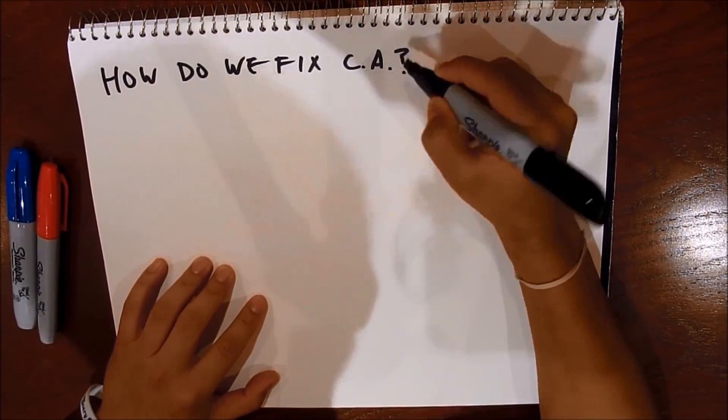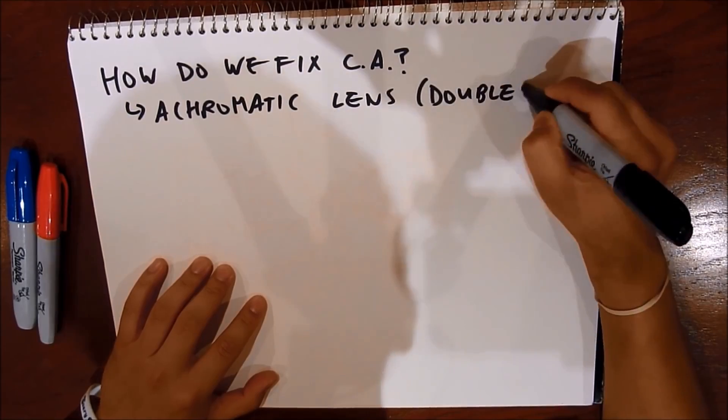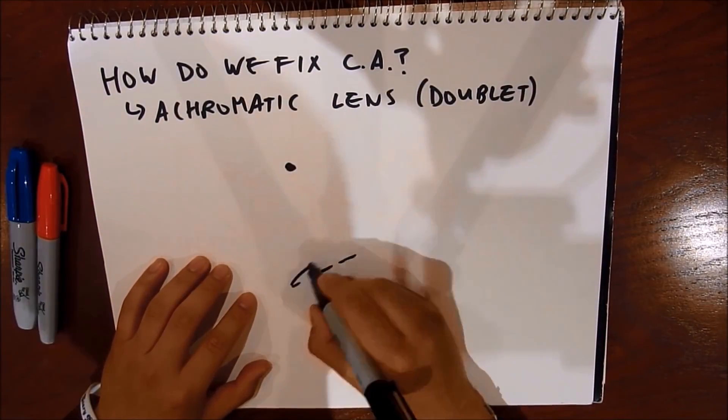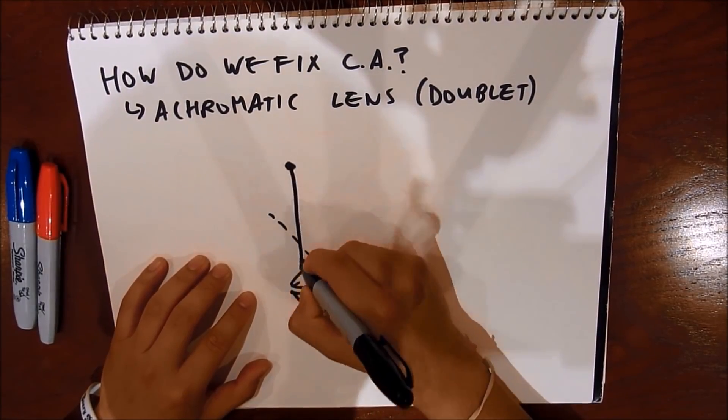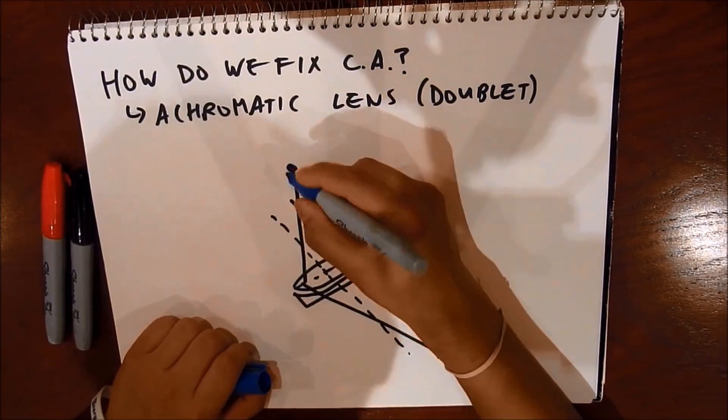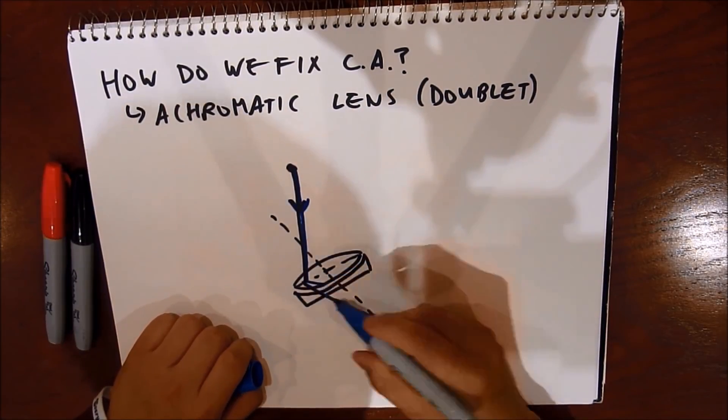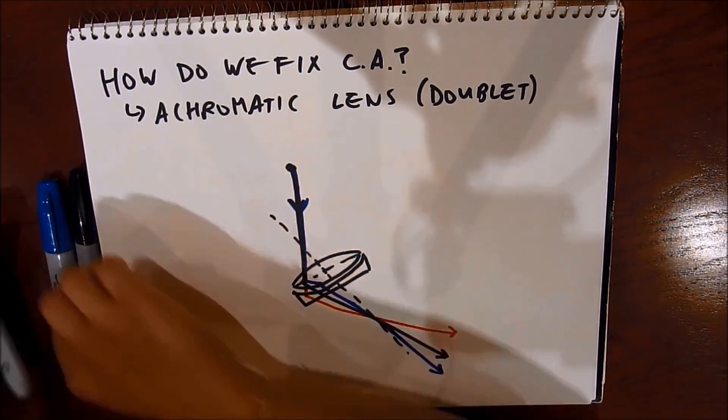So how do we fix chromatic aberration? Scientists use what is called an achromatic lens which is a doublet of two different lens that have chromatic aberration in opposite directions and it cancels each other out. Here we see light pass through. Blue light bends more through the convex lens but bends less through the concave lens so the effect cancels each other out and the opposite happens for red.